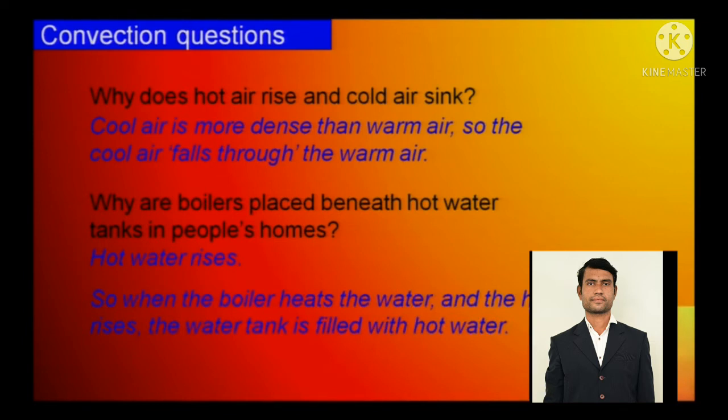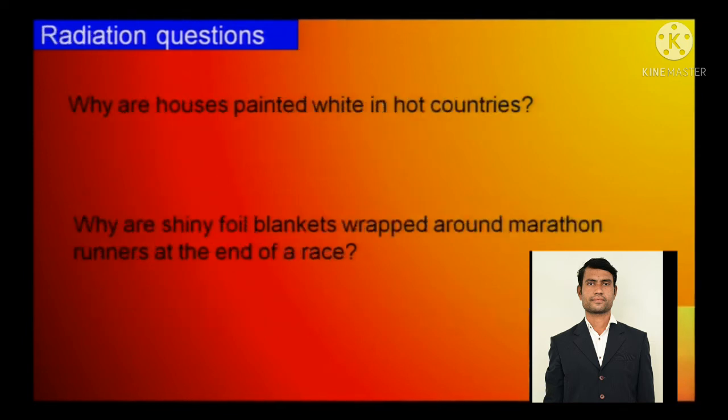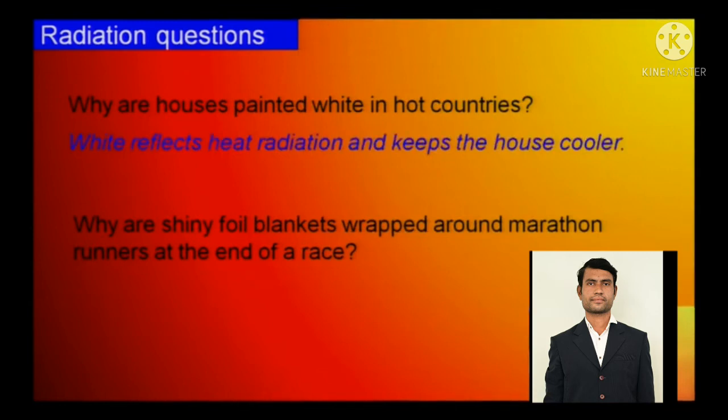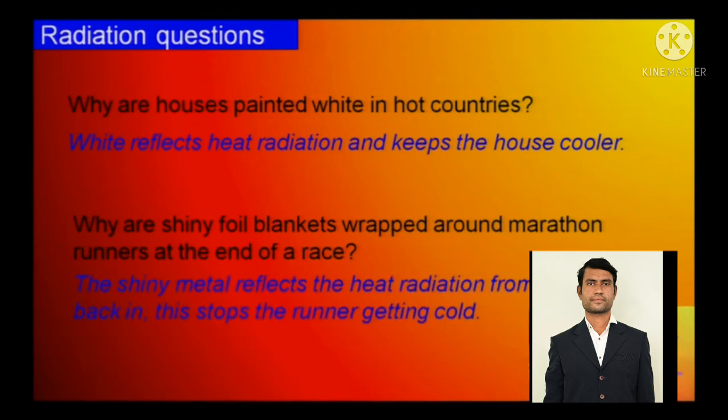Why are the houses painted white in hot countries? White reflects heat radiation, just now we have seen, and keeps a house cooler. Why are shiny foil blankets wrapped around marathon runners at the end of a race? The shiny metal reflects the heat radiation from the runner back in, this stops the runner getting cold. The shiny part reflects more. So that is why more amount of heat gets wiped off.